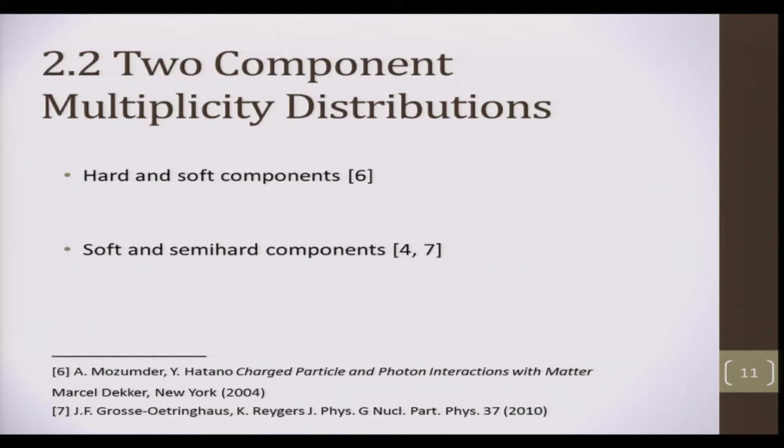This work has also been done with other distributions by other authors, who have adopted a slightly different interpretation. They've used soft and semi-hard components, where soft refers to collisions that do not produce mini-jets, and semi-hard referring to collisions that do produce mini-jets. Mini-jets are defined as groups of particles with transverse momentum more than 5 giga electron volts.